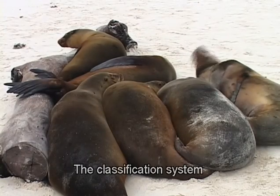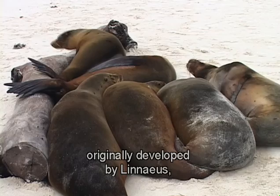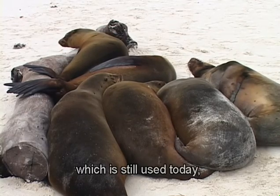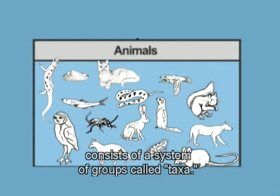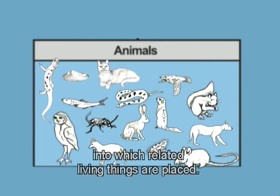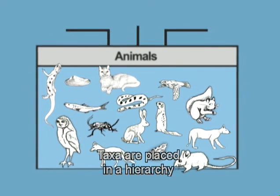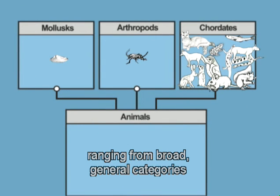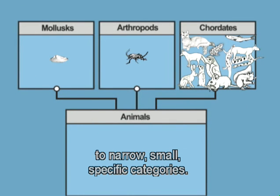The classification system originally developed by Linnaeus, which is still used today, consists of a system of groups called taxa. Each taxon is a category into which related living things are placed. Taxa are placed in a hierarchy, ranging from broad general categories to narrow, small, specific categories.